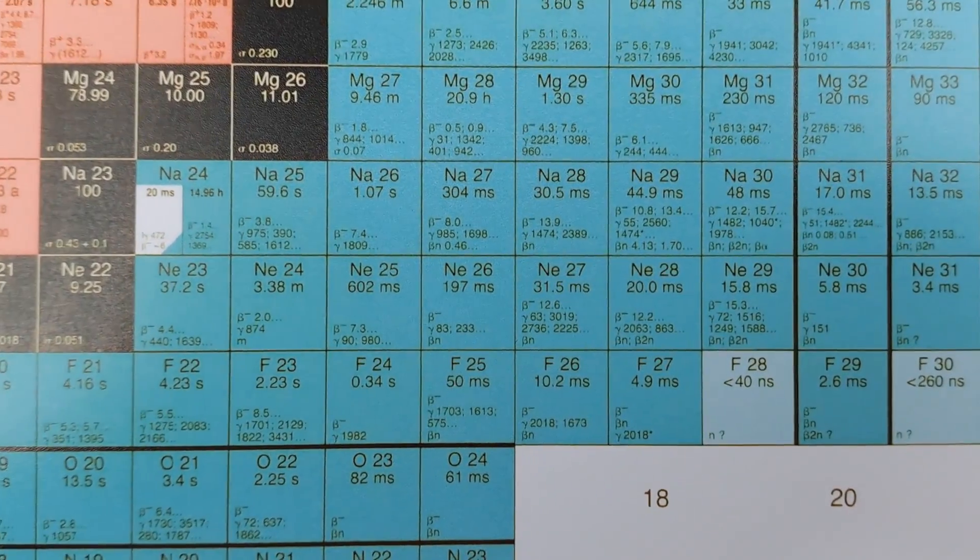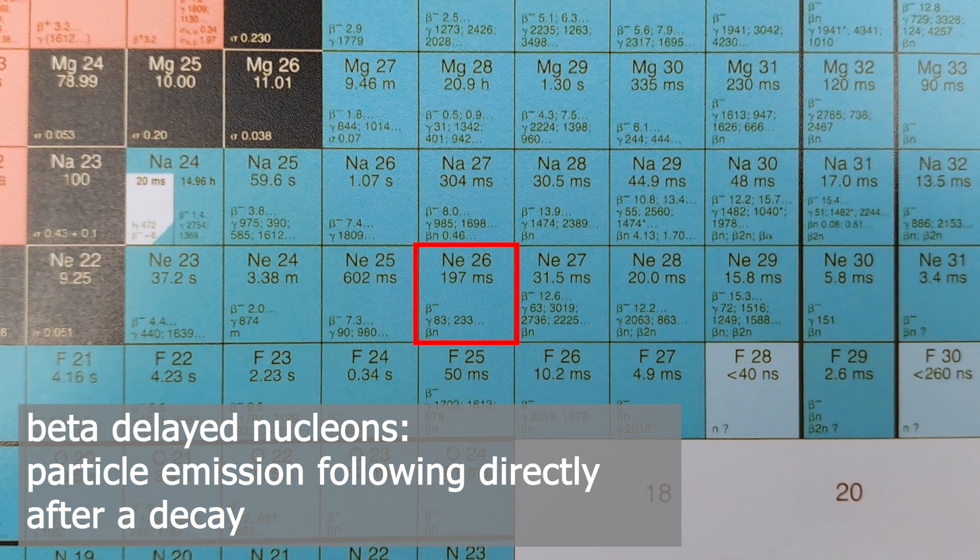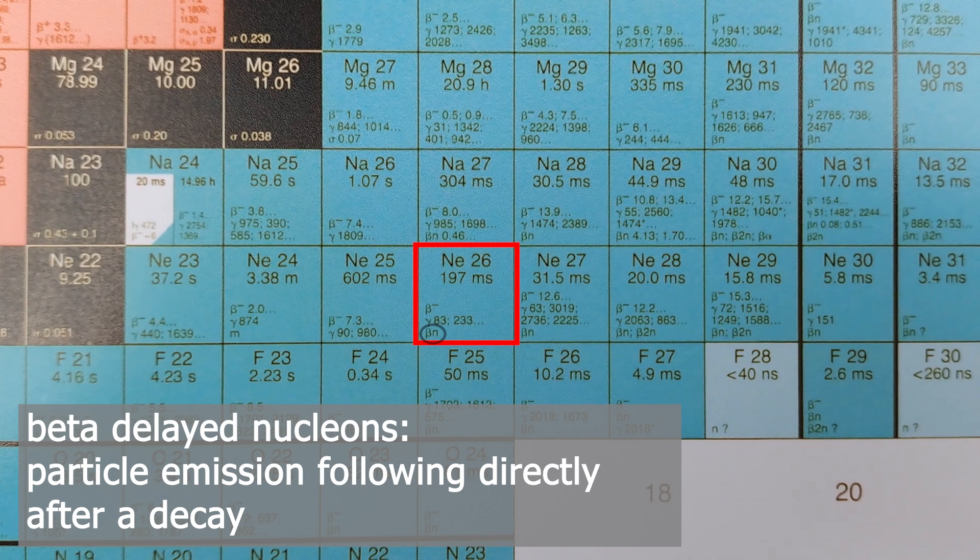The next question is about delayed nucleons. If a beta decay leads to a daughter isomeric state that is energetically very high, it may not transition to the ground state of the actual daughter nucleus. Instead, another nucleon may be emitted. For example, with Neon-26. After a beta-minus decay, an excited sodium-26 nucleus is formed. This excited state of the daughter nucleus may emit a neutron to become sodium-25. These beta-delayed neutrons play a significant role when it comes to fission and moderation of nuclear reactors.